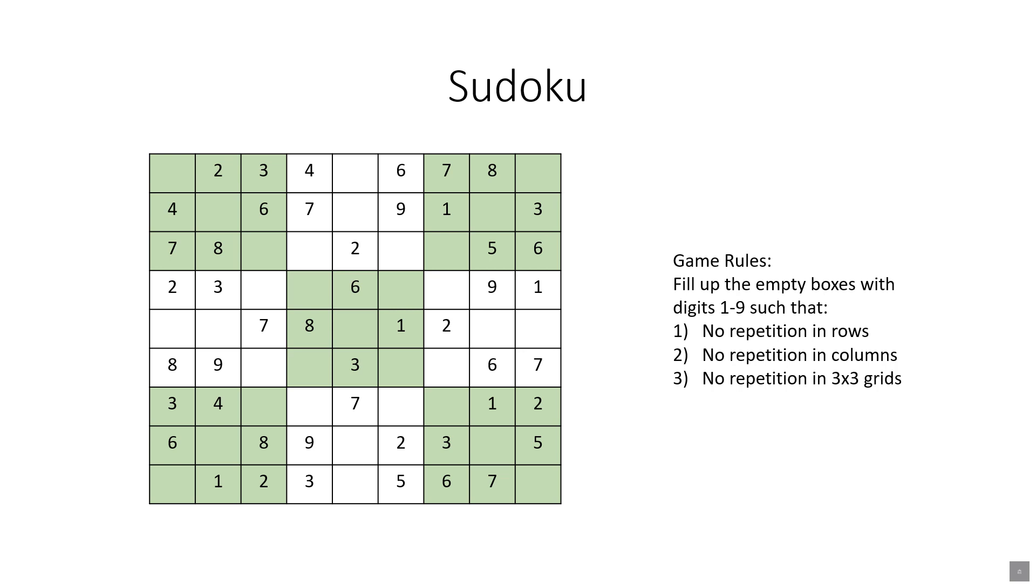Let's quickly go over the game rules. In Sudoku you're given a 9 by 9 grid and some of the numbers are filled and some numbers are empty. The user has to fill up the empty spots with numbers between 1 to 9 so that there is no repetition in the rows, no repetition in the columns, and no repetition in each of these 3 by 3 grids.